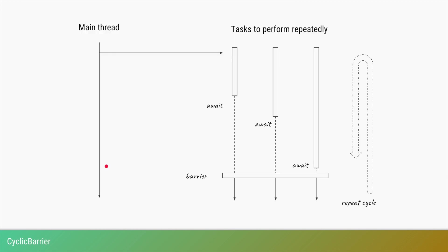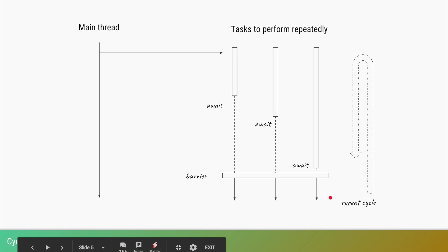Visually: the main thread starts the tasks and has no other operations to perform. The first task calls await quickly but waits since the other two haven't arrived. The second arrives later but still waits for the third. As soon as the third thread calls await, all three are ready — the barrier is broken and all three tasks proceed. Since this is a CyclicBarrier, as the name suggests it is cyclic in nature and the same barrier can be used to repeat the whole cycle again.